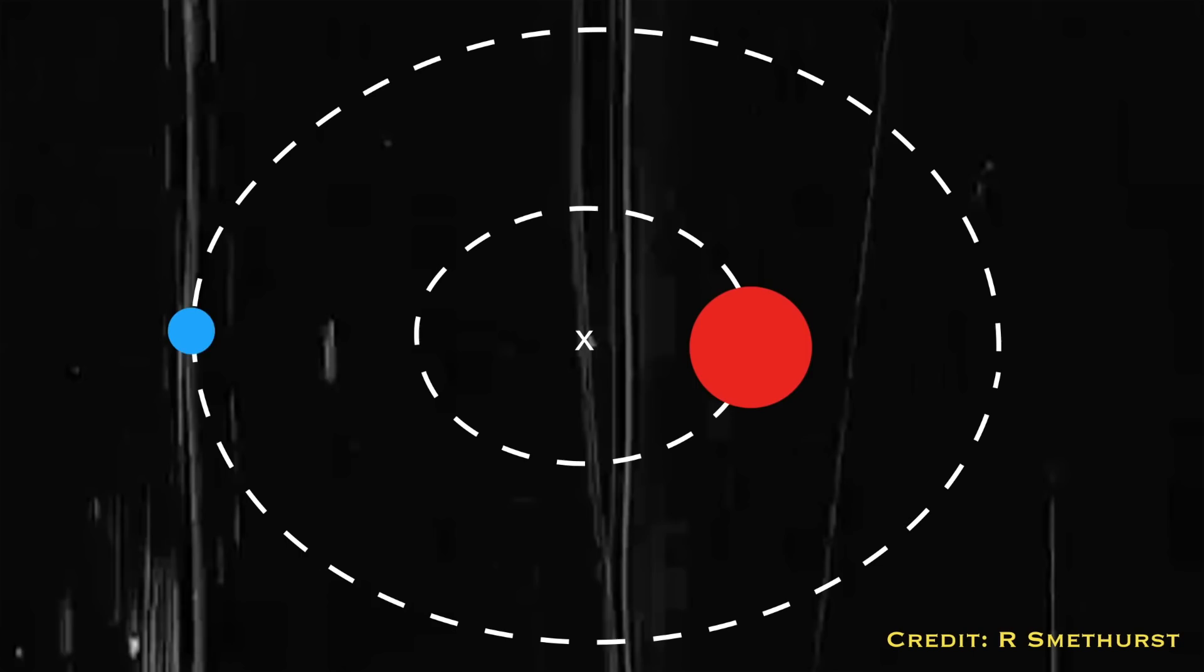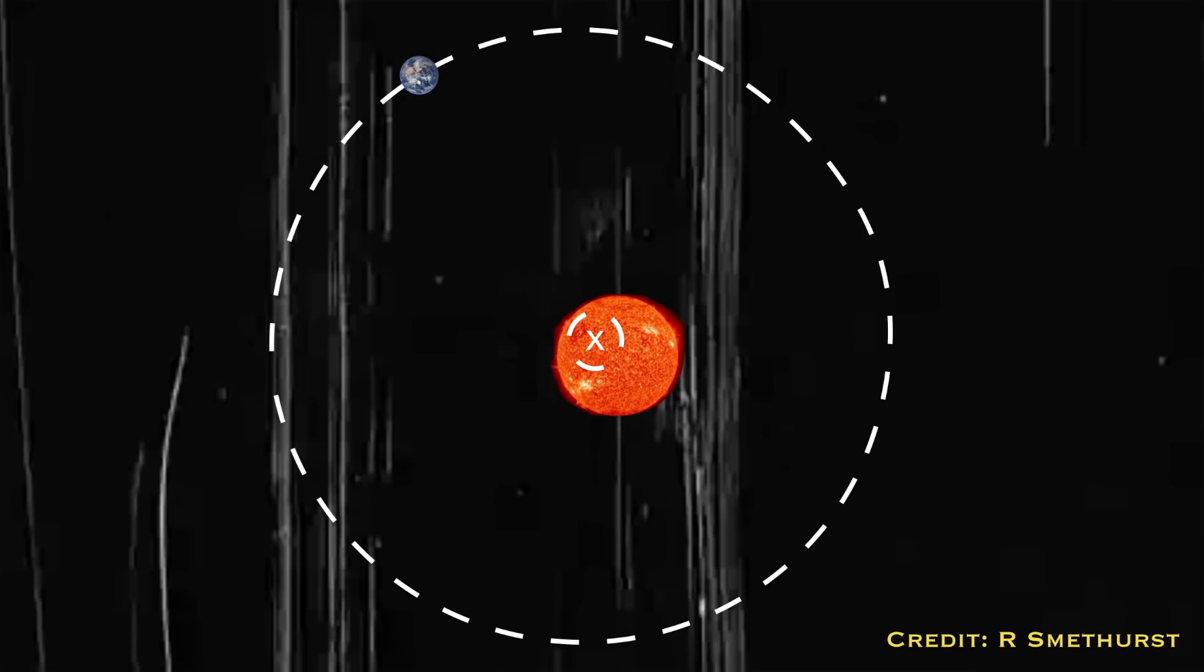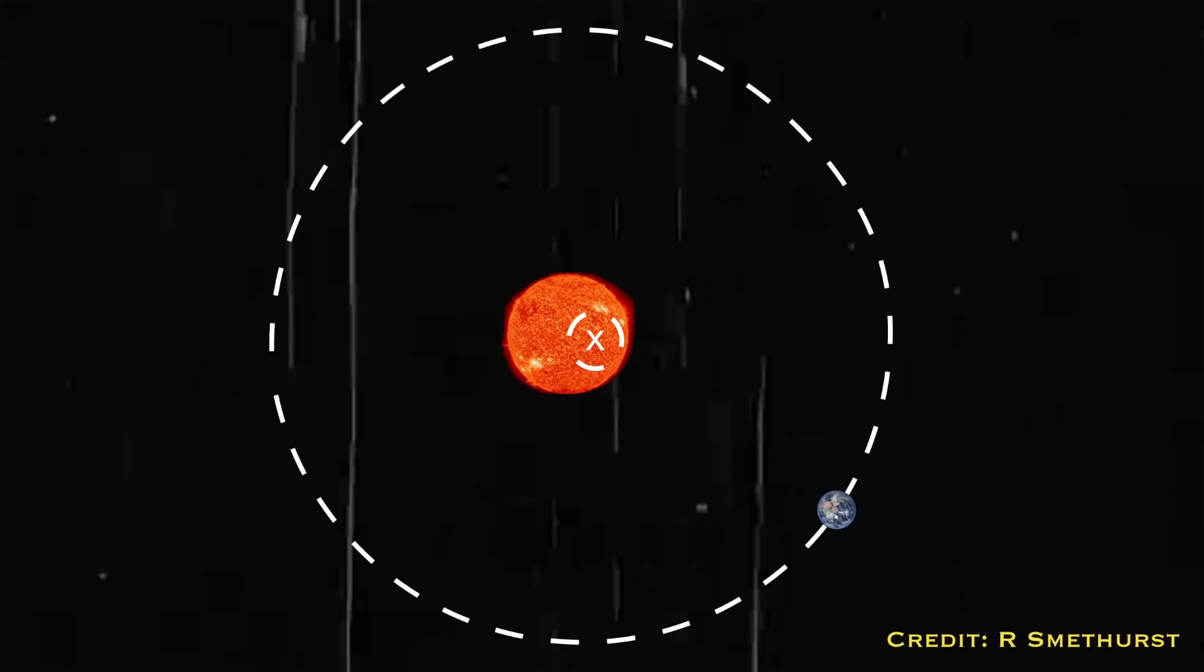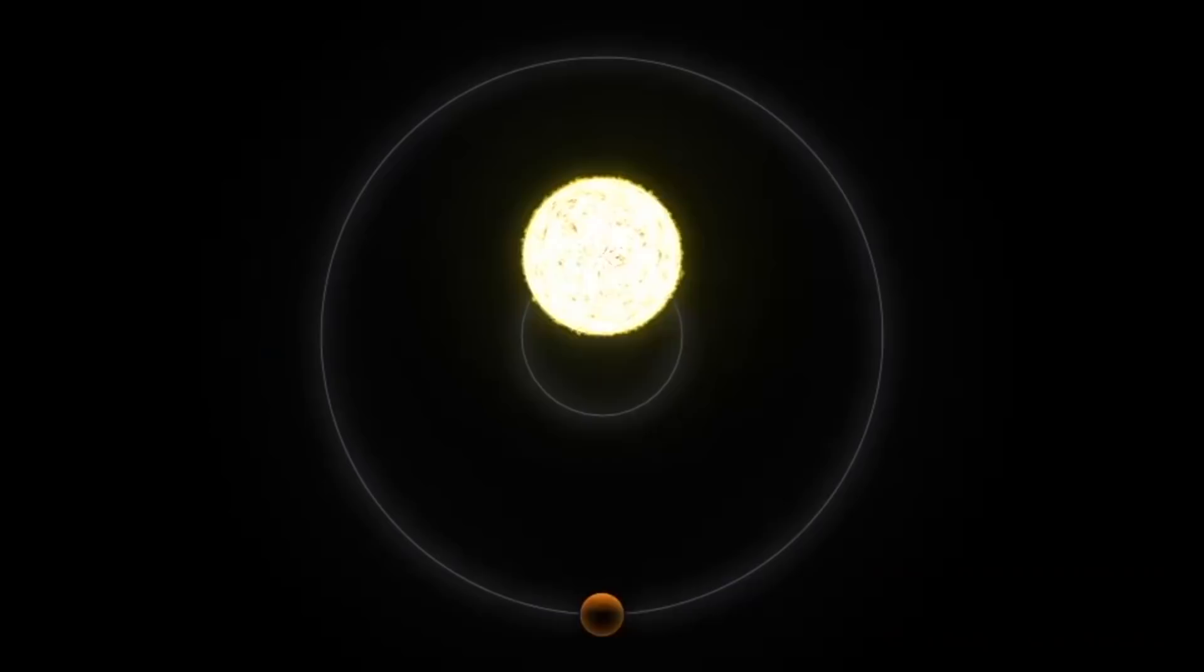If you make one mass much smaller, then that centre of mass will shift towards the larger object. And if you keep making one of them smaller and smaller, eventually that centre of mass will shift so that it's inside one of the objects. That's what happens when a planet's going around a star. The centre of mass is inside the star, but it's not exactly in the centre. So the star itself is orbiting around a point in its middle.